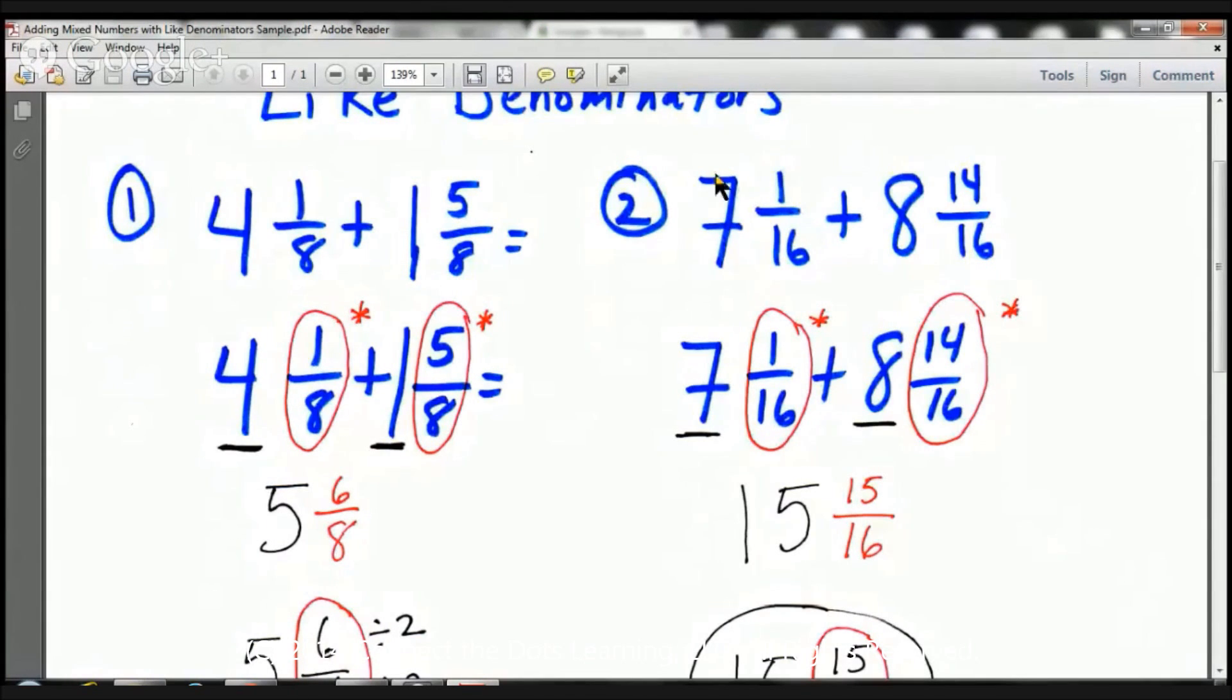Our second example is we have this mixed number here. That's 7 and 1 sixteenths. We have a whole number here, the 7. We have 1 sixteenths there. Plus we have our whole number here, 8, and here we have 14 sixteenths. So this number here is 8 and 14 sixteenths.